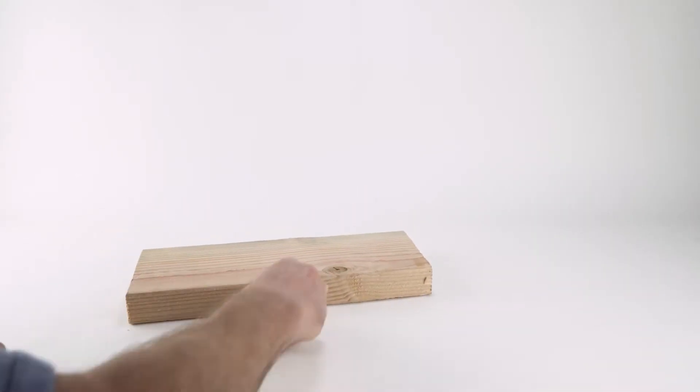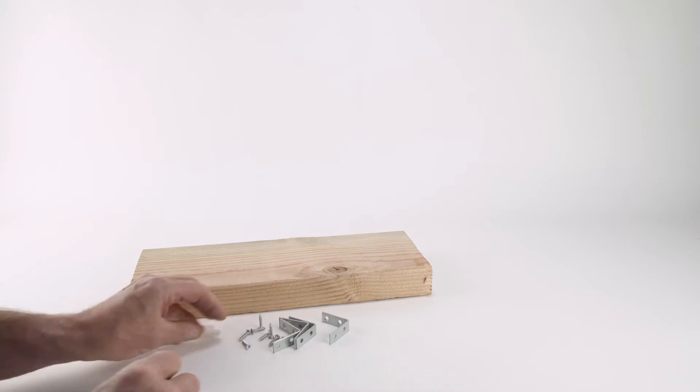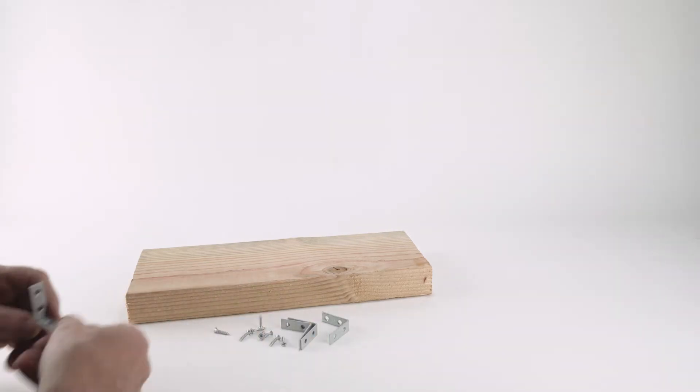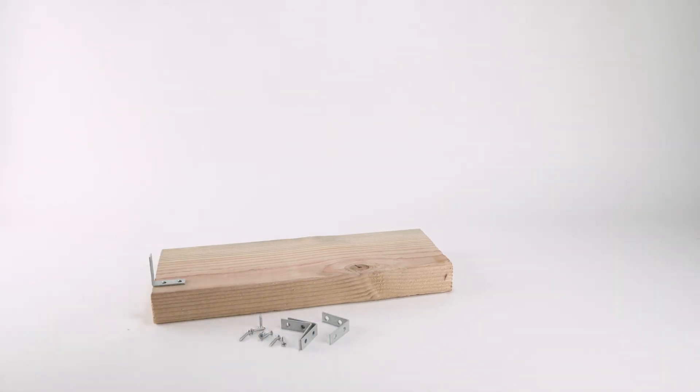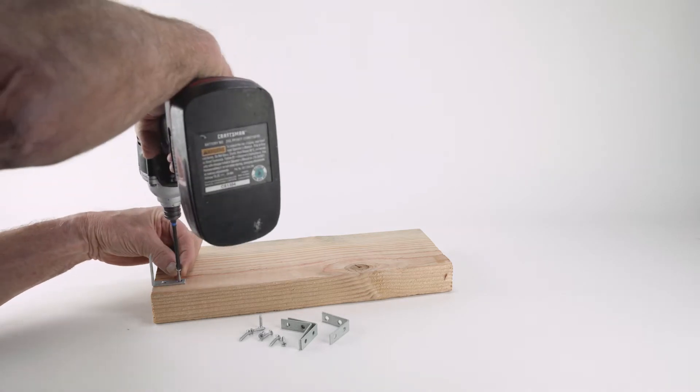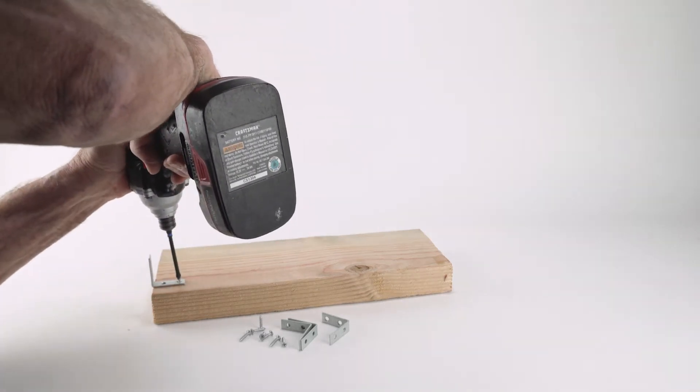Measure and cut a wood cross support approximately 2 by 6 inches to fit between the wall studs. Attach four corner brackets with screws to the wood cross support.